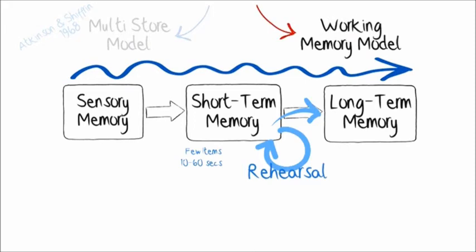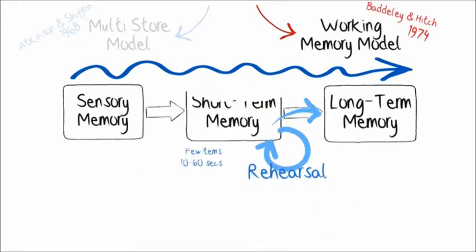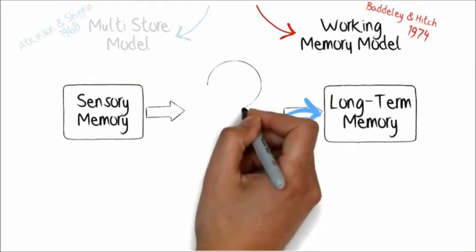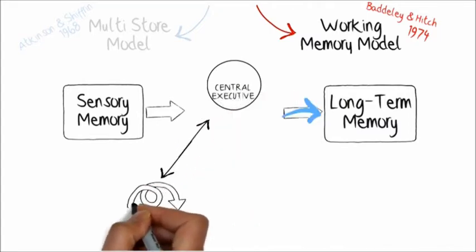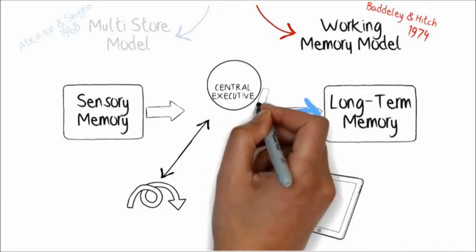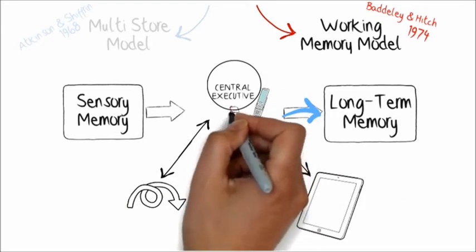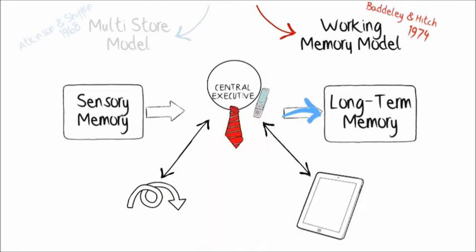However, this model has been considered too simplistic, and in 1974 Baddeley and Hitch proposed the working memory model, where the short-term storage is replaced by three components. The central executive, who acts like a company boss, making decisions about which issues deserve attention, controlling and integrating information from its two assistants.